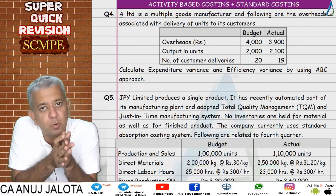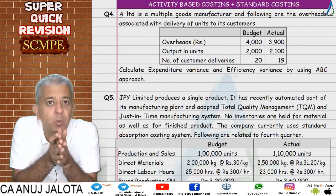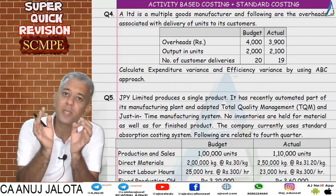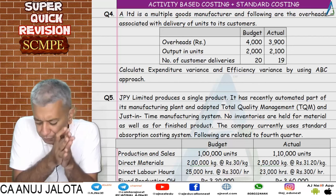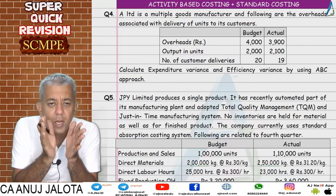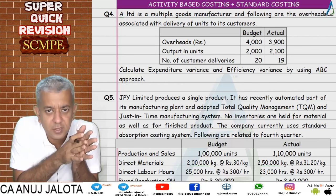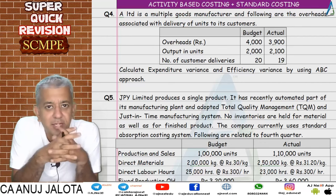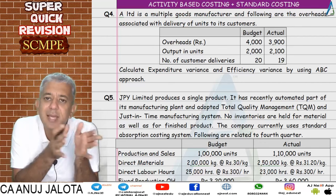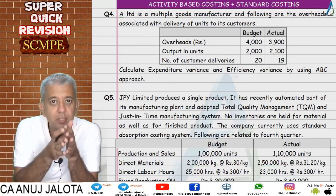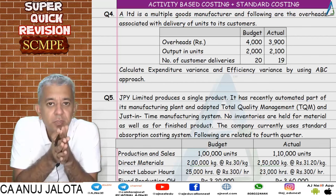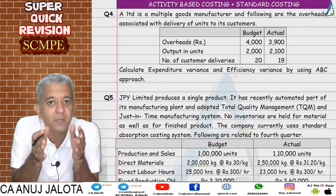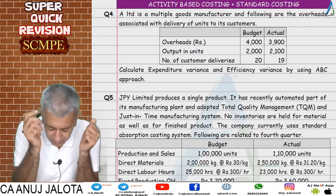We finished with question number three; it's question number four today. The next four questions are on activity based costing plus standard costing. One concept you should understand: under absorption costing we have many fixed overhead variances, under marginal costing only one — expenditure variance. Activity based costing says fixed overheads with a cost driver should be treated as variable overheads, and their variances computed accordingly.